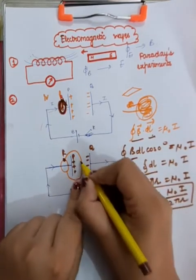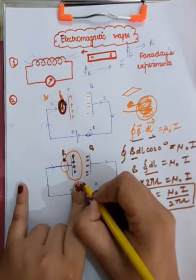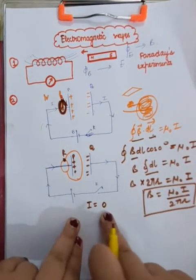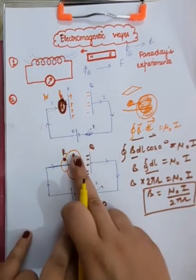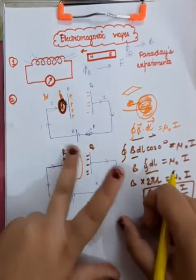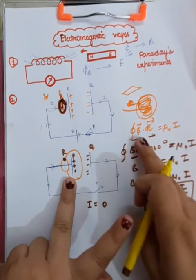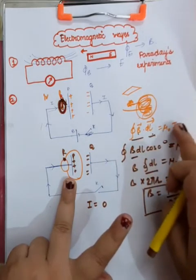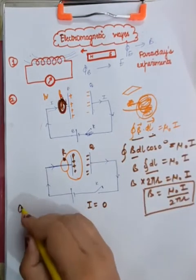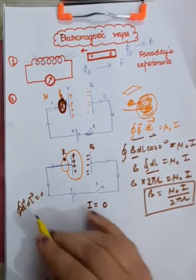Since no current actually flows inside the plates of the capacitor, capital I equals zero for this loop. When you calculate the magnetic field at point R through this loop: the closed line integral of B·dL = mu-naught × 0 = 0, so B·dL = 0 for point R, meaning B = 0.